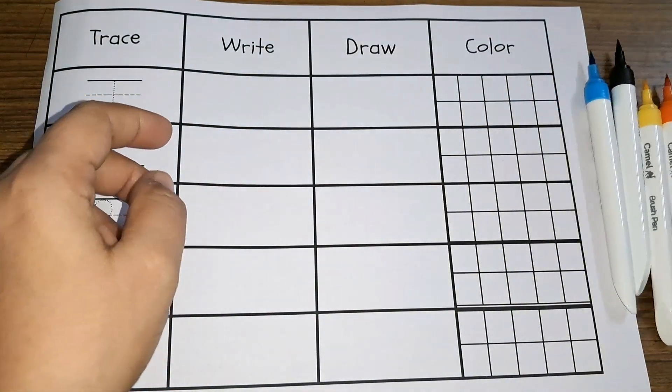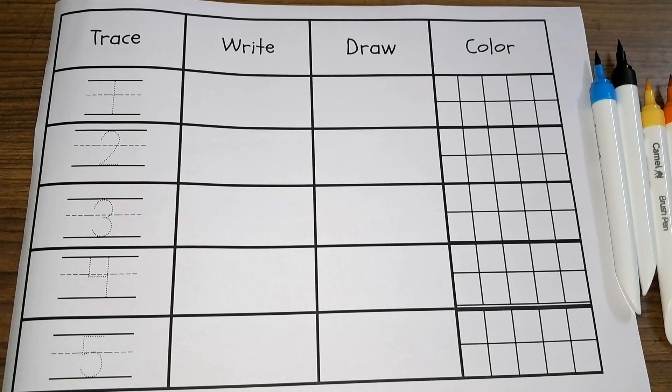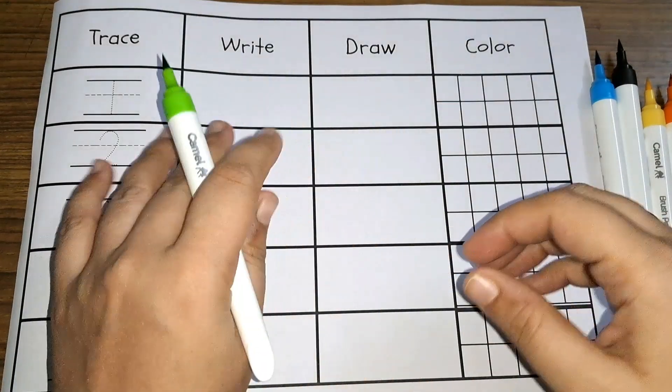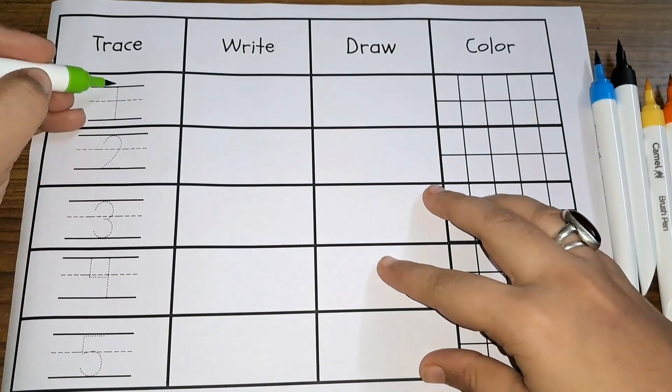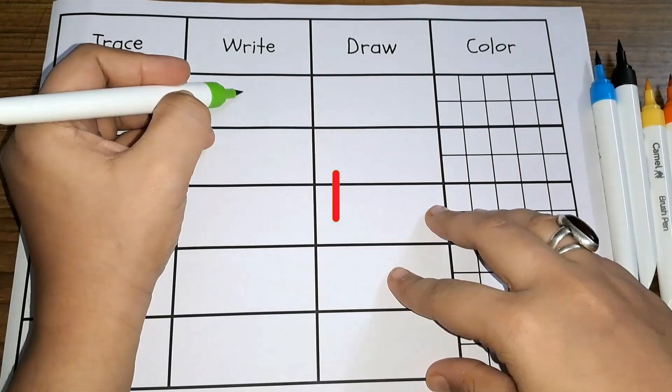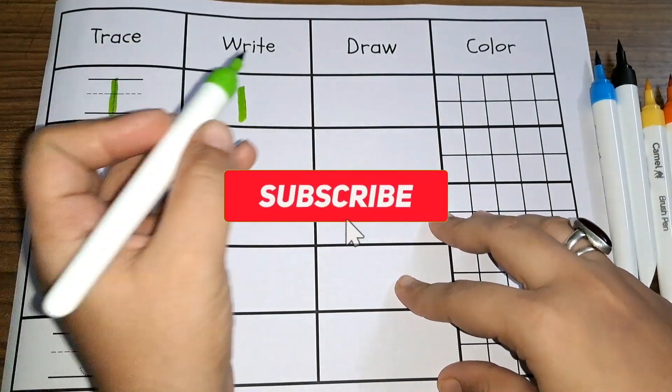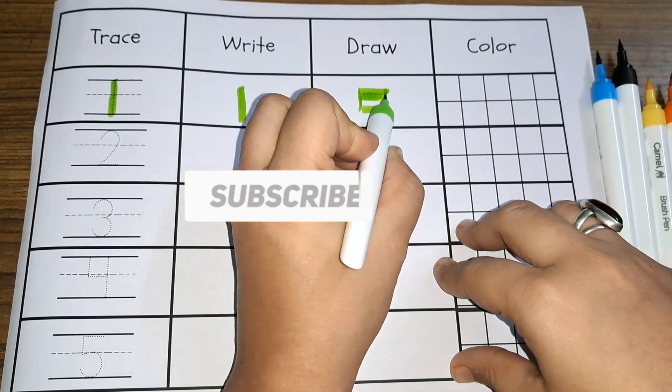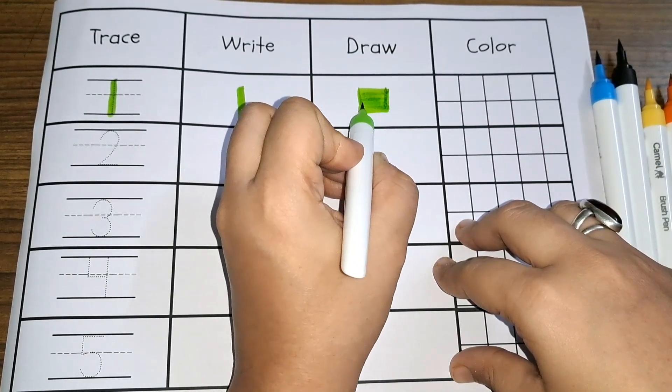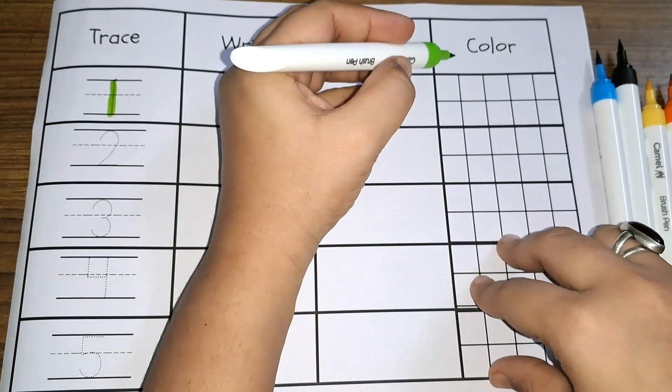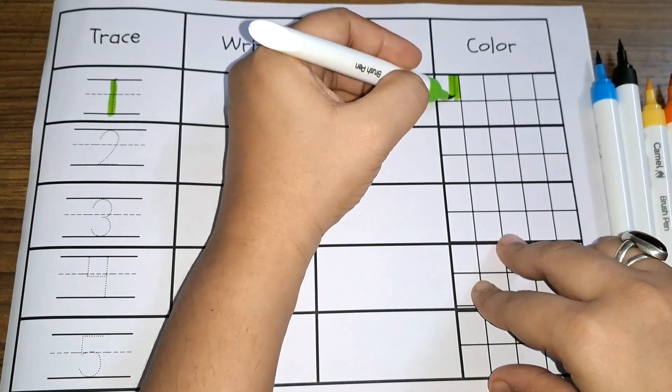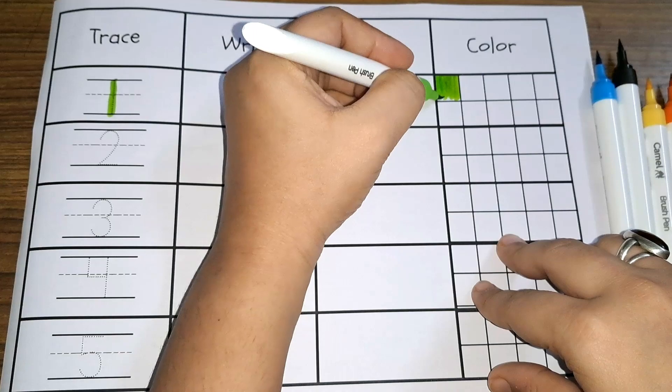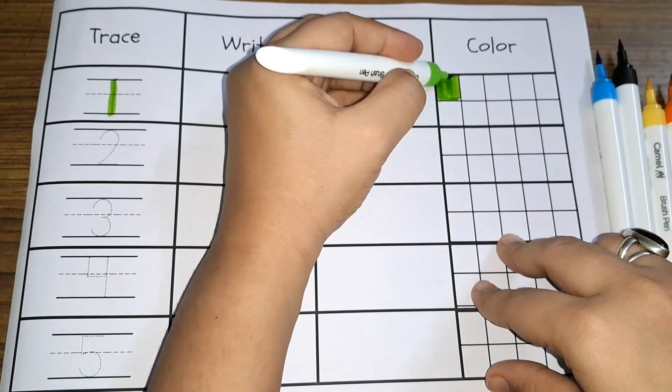Now let us get started. Let's start with green color. Number 1, number 1. 1 square, 1 square, 1, 1.